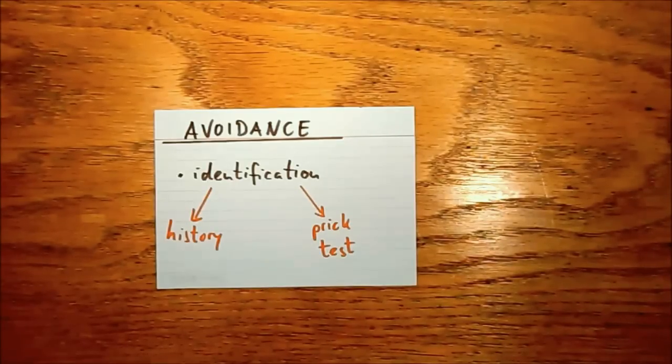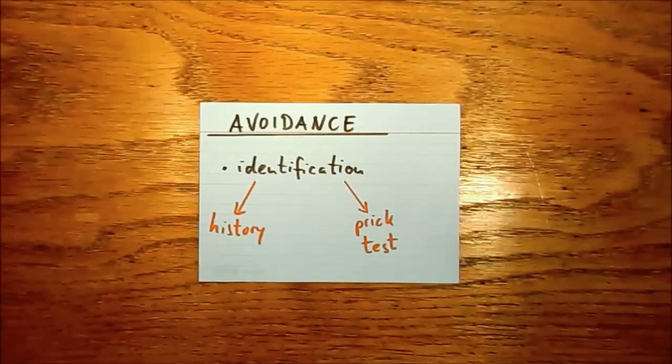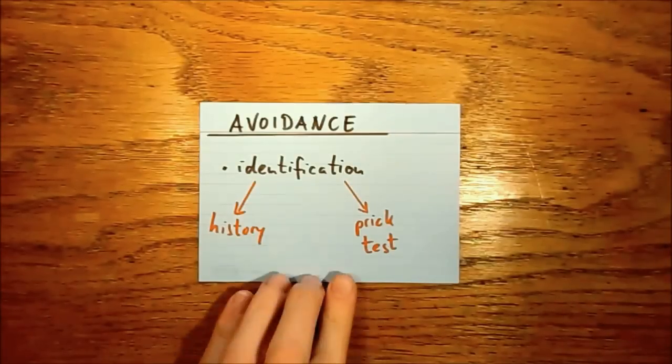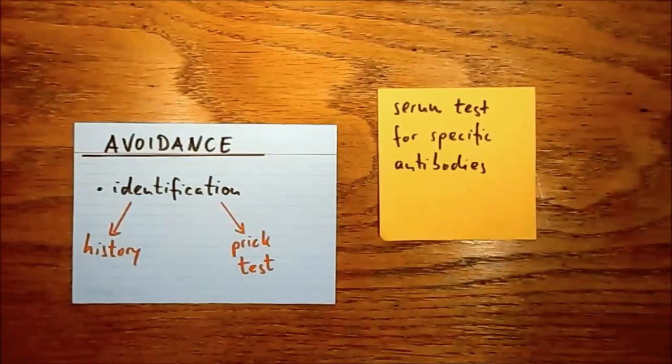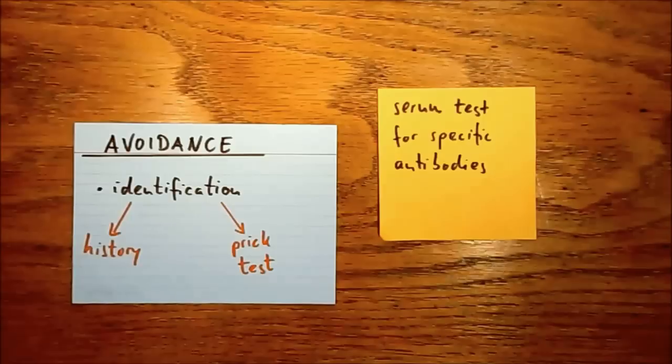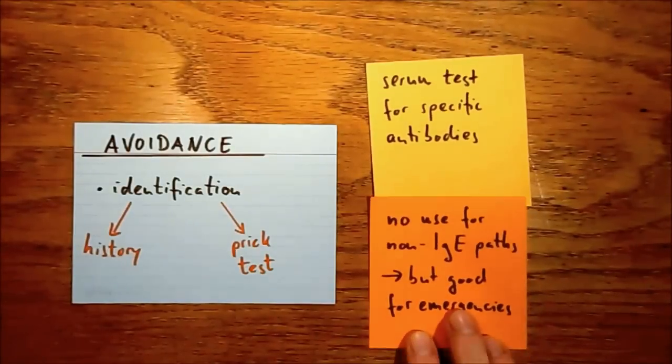Patients might want to undergo an allergy test after they've recovered, but both serum and scratch tests have their disadvantages. Serum tests might identify IgE antibodies, but that doesn't necessarily mean that the patient is allergic to that substance. Skin tests, on the other hand, or prick tests, are easy to perform. That is great.